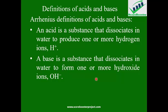Arrhenius defines an acid as a substance that dissociates in water to produce hydrogen ions (H+). Arrhenius considered water as the solvent. When acid is put in water, there is dissociation between the positive hydrogen ion and the negative non-metallic ion in the acid. What Arrhenius was telling us is that all acids must contain hydrogen, and all bases must contain hydroxide ions.